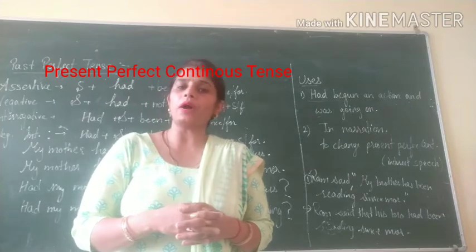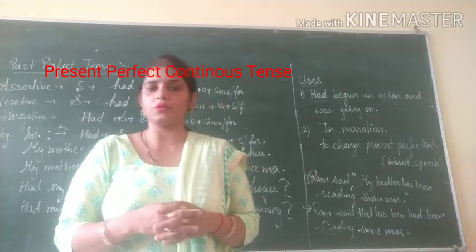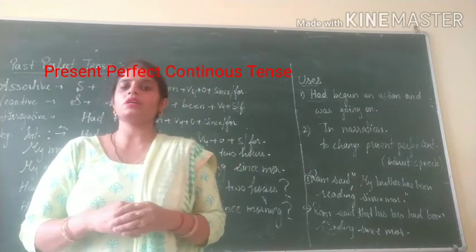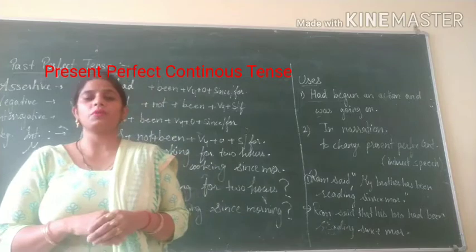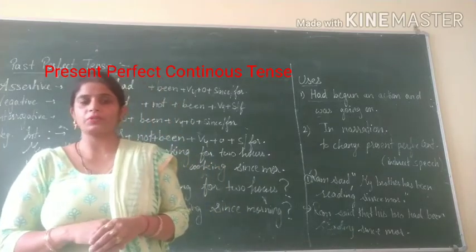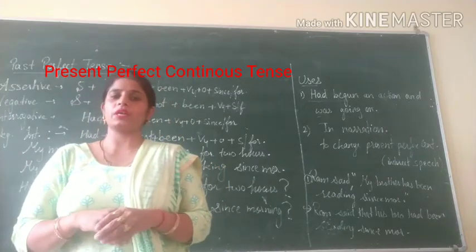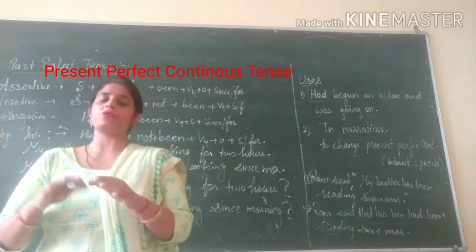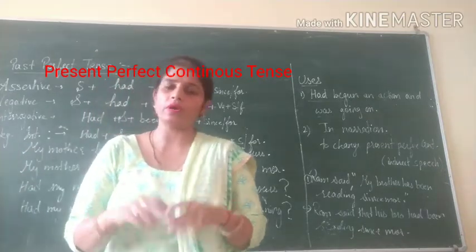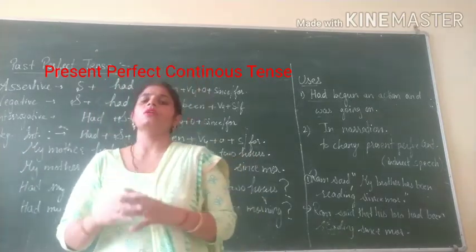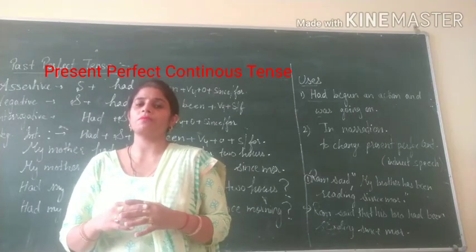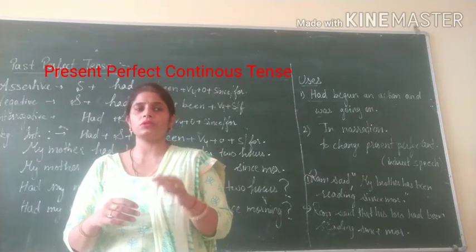The same concept applies in the present — in present perfect continuous we use it for an action whose time started in the past and is still going on. Then we use present perfect continuous. For past, we use past perfect continuous.